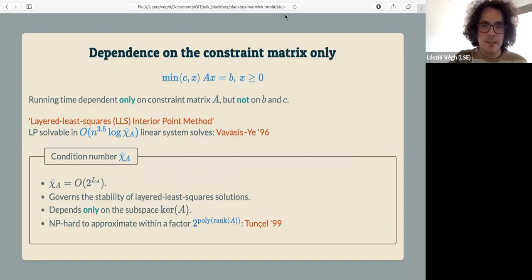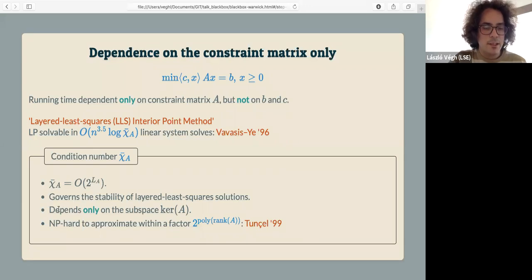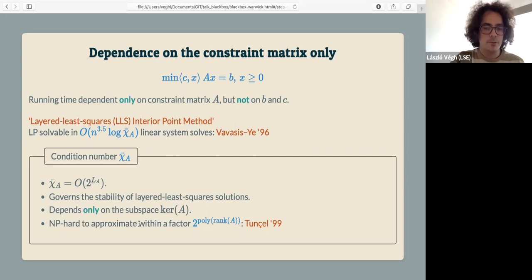The Vavasis-Ye result extends Tardos's result because chi-bar bounds the sub-determinant bound for integer constraint matrices. It's a very nice geometrical quantity that does not depend on the actual matrix entries, but just on the subspace defined as the kernel of this matrix. However, as some disappointing news, this is very hard to compute or even approximate. We cannot get a 2-to-the-poly-M approximation according to a result by Tunçel — it's already NP-hard.